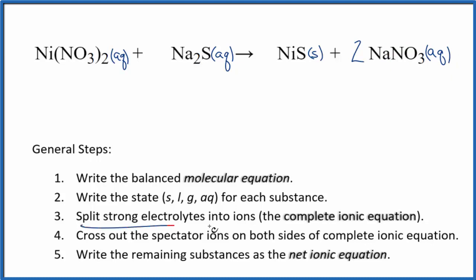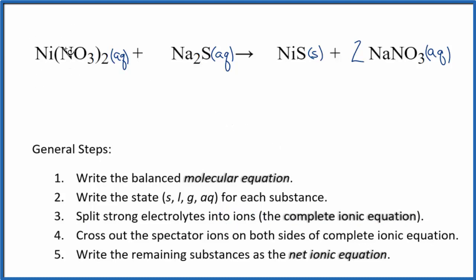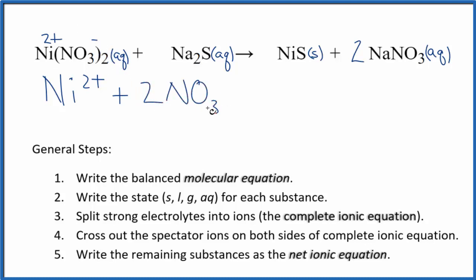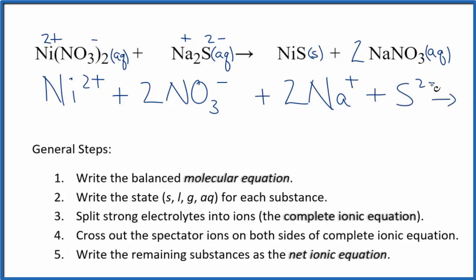Once we have our states, we can split the strong electrolytes into their ions for the complete ionic equation. Nickel's charge — we know the nitrate ion is 1- and we have two of them, so the nickel has to be 2+. So we have the Ni2+ ion, plus two nitrate ions: 2NO3-. Sodium is in group 1, so that's 1+, and sulfide is 2-. These are the reactants in our complete ionic equation.